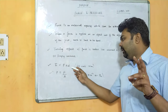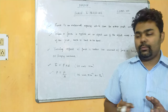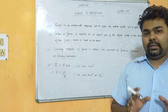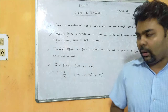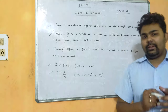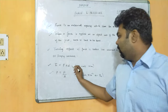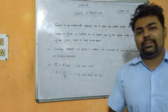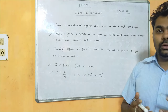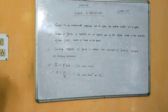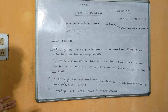Torque depends on two factors: force and perpendicular distance. Pressure is defined as thrust per unit area, or force per unit area — both are the same. Thrust is the perpendicular or normal force applied on an object, so pressure equals F divided by A. The SI unit of torque is Newton meter, and the SI unit of pressure is Pascal, or Newton per meter square.